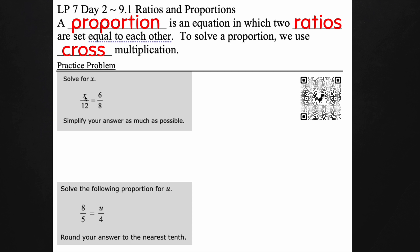So you can see down here I have this fraction x over 12 equaling this other fraction 6 over 8. So it's two fractions equal to each other and that is a proportion.